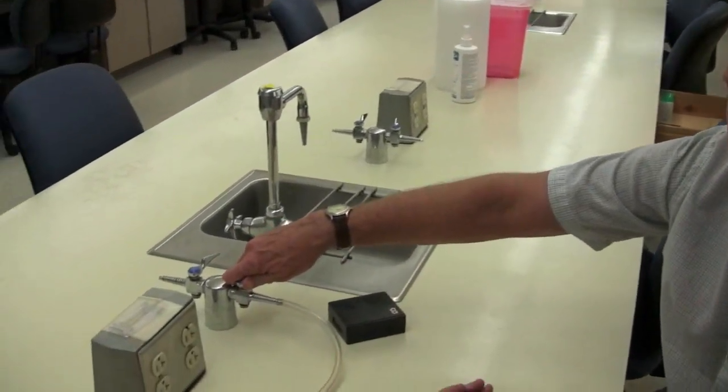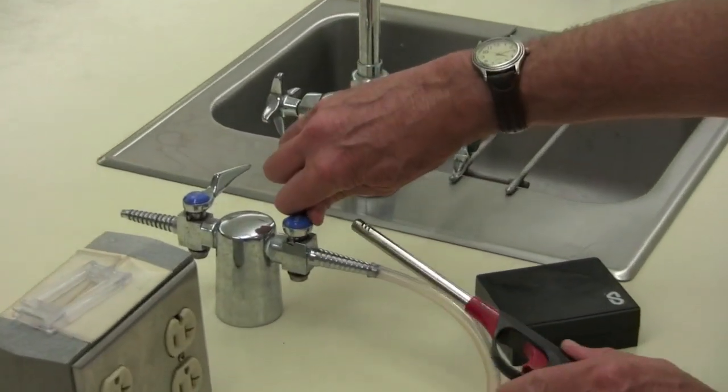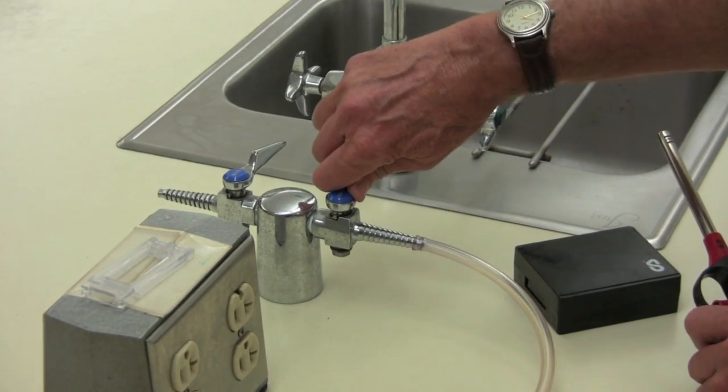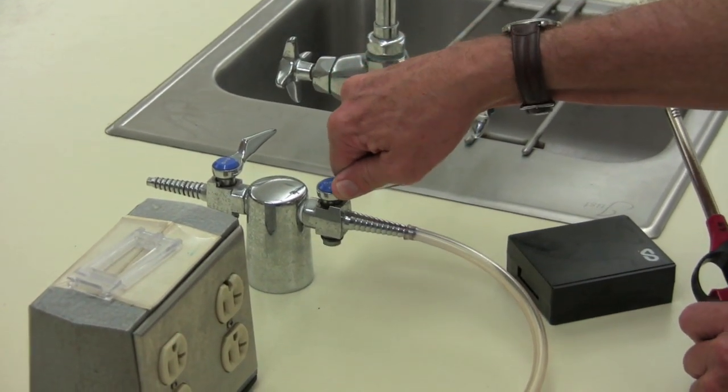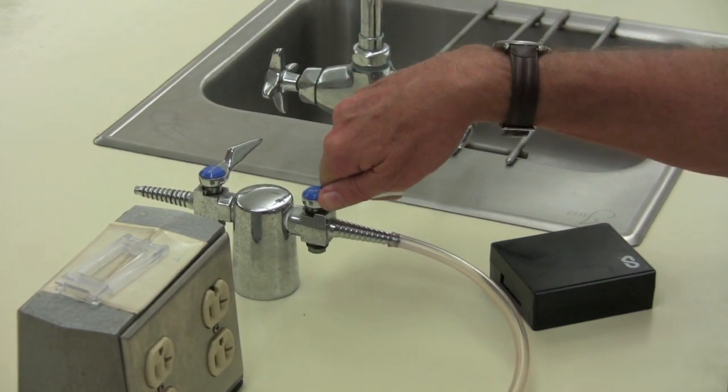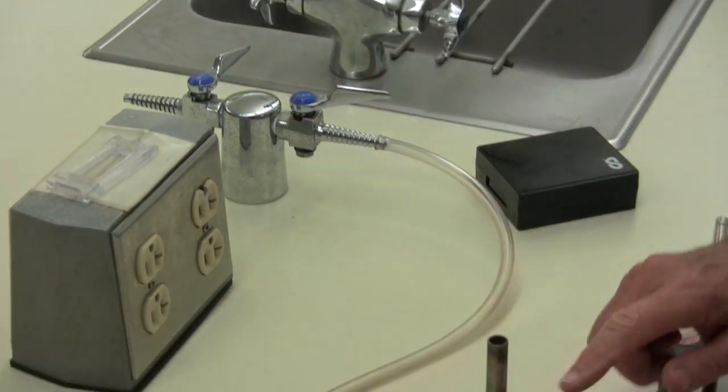First light the fire, the Bunsen burner. You want to first of all use the gas valve knob and just turn it till you start hearing a little bit of gas coming out of the Bunsen burner.